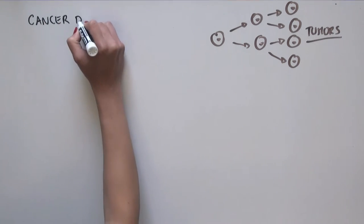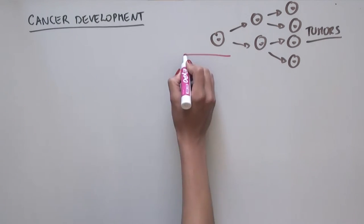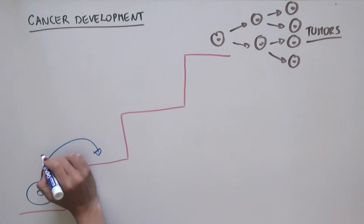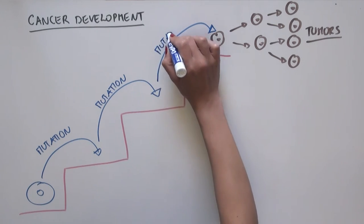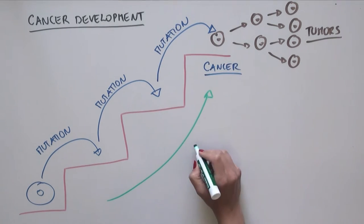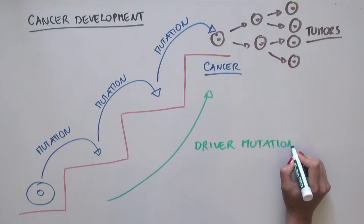We can visualize the process of cancer development as a staircase, where, as cells acquire more and more mutations, they move up this staircase to become cancer. The mutations that allow a cell to move up the staircase are called driver mutations.